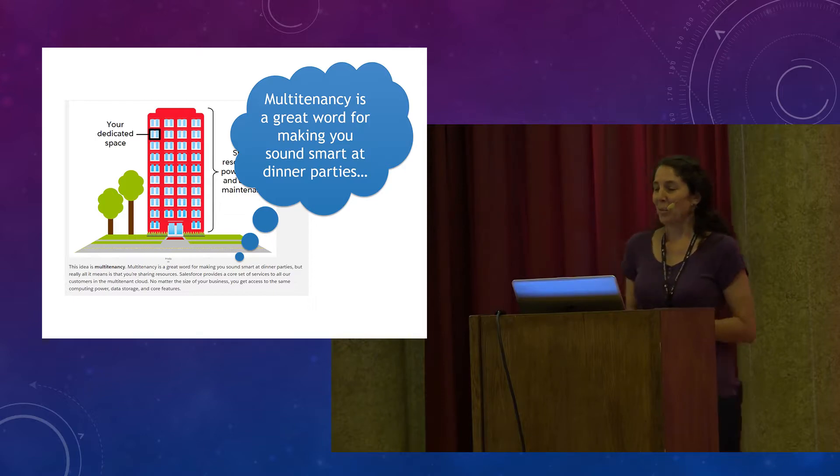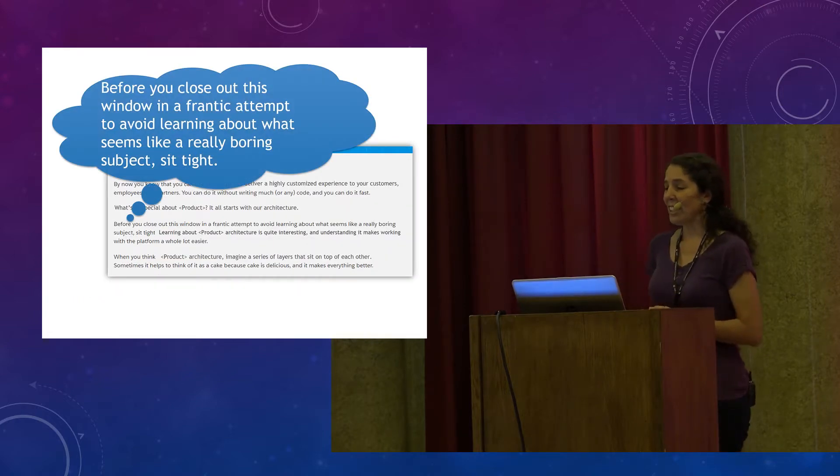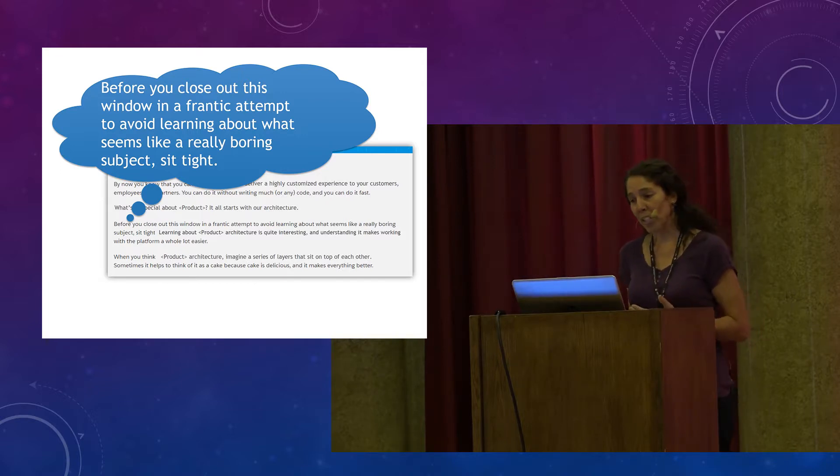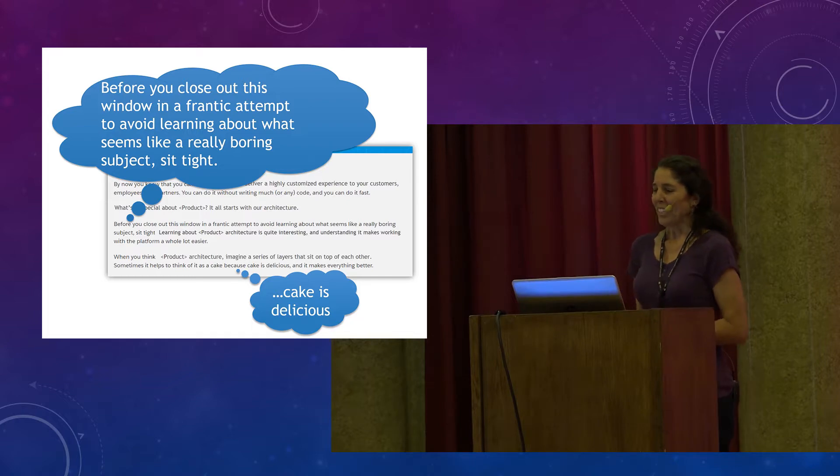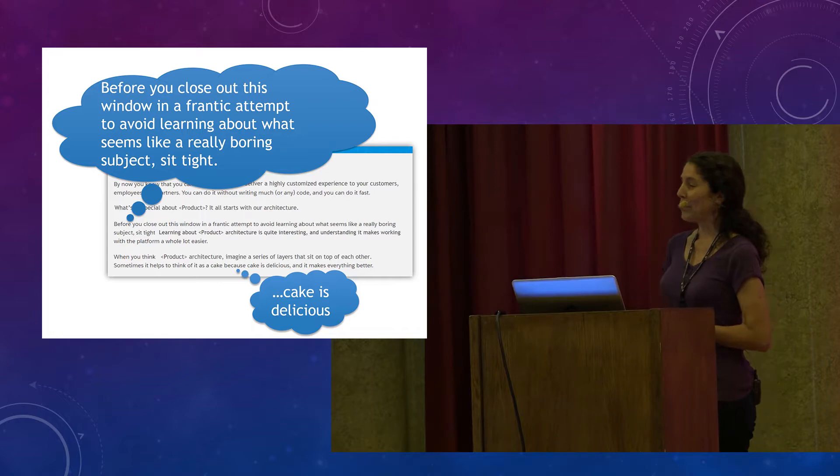In this online training manual, the writer used humor when explaining the concept of multi-tenancy. They wrote, "Multi-tenancy is a great word for making you sound smart at dinner parties." The humor is positive. It doesn't come at the expense of anyone, except perhaps for the unsuspecting guests at the dinner party. And this lighthearted conceptual passage uses humor to create a sense of empathy for the poor reader who's slogging through the boring user guide. "Before you close out this window in a frantic attempt to avoid learning about what seems like a boring subject, sit tight." And it ends with a cake analogy, back to the food. "Sometimes it helps to think of it as a cake, because cake is delicious and it makes everything better." Another example of positive humor, everyone wins with delicious cake.